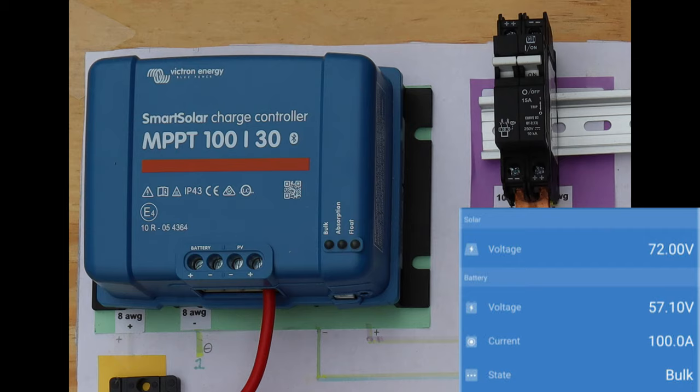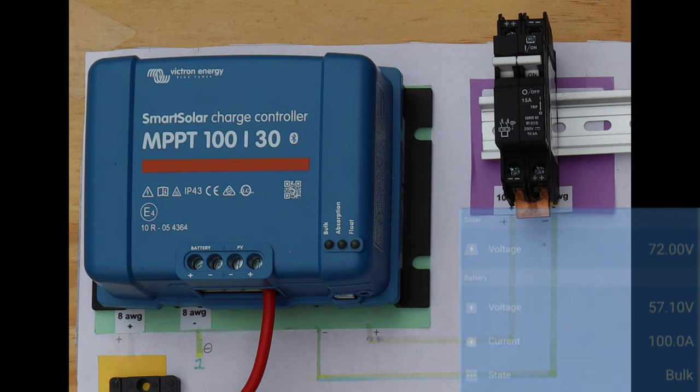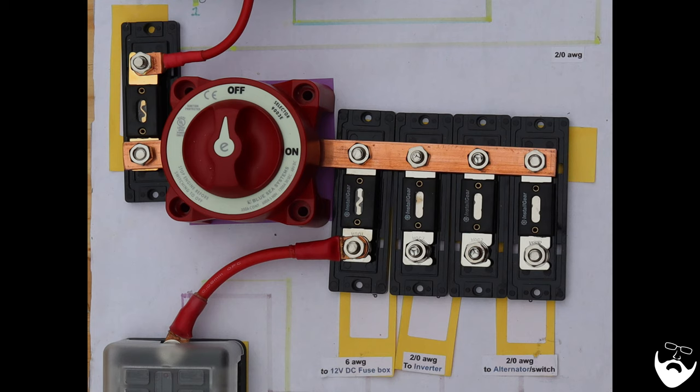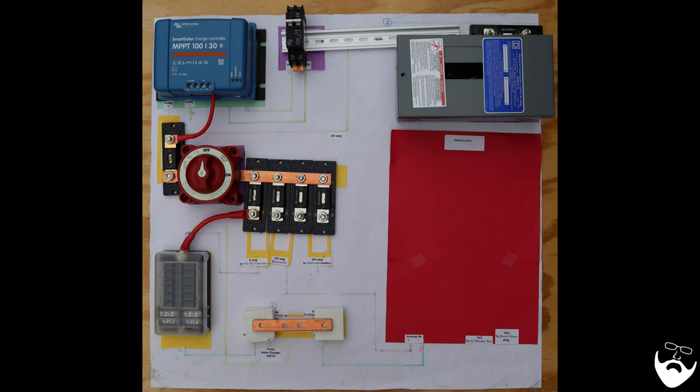This charge controller has a Bluetooth app that allows you to monitor the charge rates, the charging voltage and current, and the condition of your batteries. An 8 gauge wire leaves the charge controller and enters a 50 amp fuse. The 50 amp fuse is connected with a bus bar to a 350 amp disconnect. Behind the disconnect is a 2/0 wire which goes through a 300 amp fuse and on to the lithium ion batteries for charging.